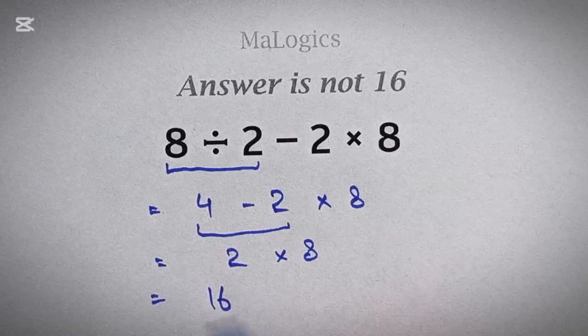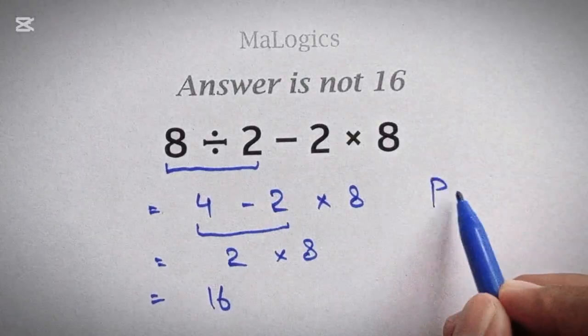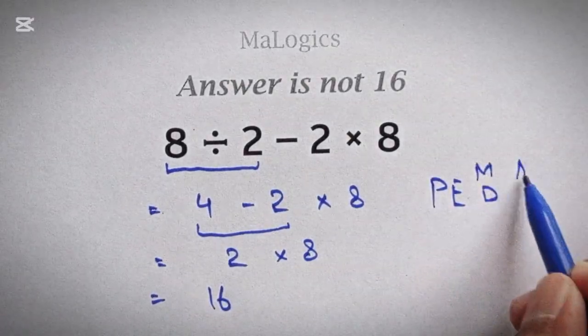But this answer is totally wrong, because we didn't follow any math rules. Now the correct path for this will be PEMDAS.